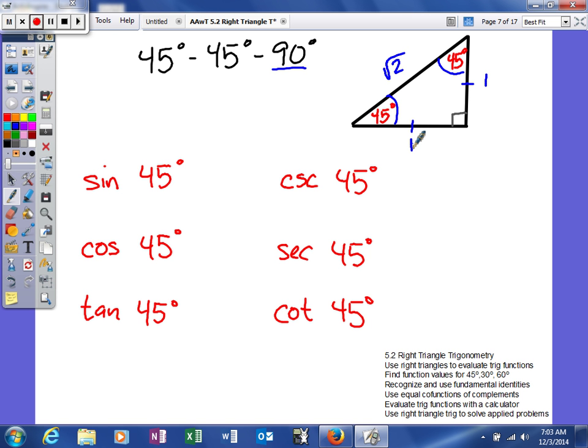What it means is anytime you have a 45, 45, 90 triangle, that the sides will always fall into these ratios that we're about to find.